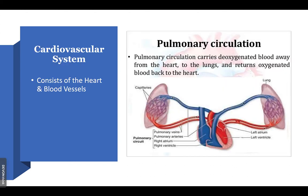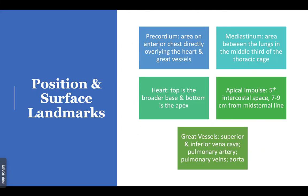The pulmonary circulation is responsible for carrying deoxygenated blood away from the heart to the lungs and returning oxygenated blood back to the heart. There are actually four pulmonary veins that do this work — two that take blood from the bronchial region on both sides. The precordium is the area on the anterior chest directly overlying the heart and great vessels. The mediastinum is the area between the lungs and the middle third of the thoracic cage.